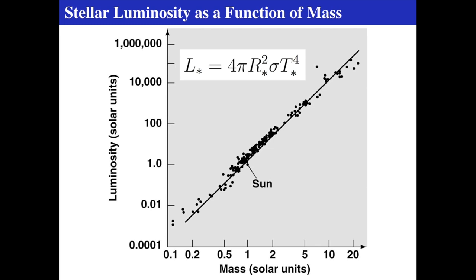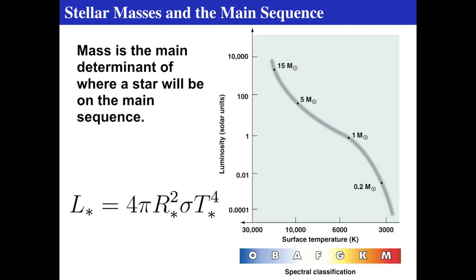Since the radius doesn't vary very much but the luminosity does, there must be an important relationship between the mass and the temperature of a star — and there is. In fact, there must be an incredibly important relationship between the mass of a star and its luminosity. For main sequence stars, the stellar luminosity is a definitive function of mass.